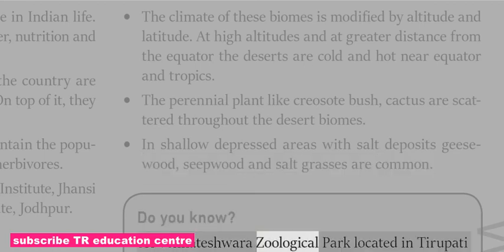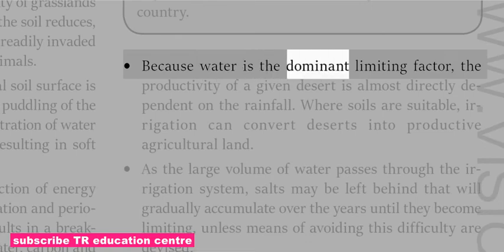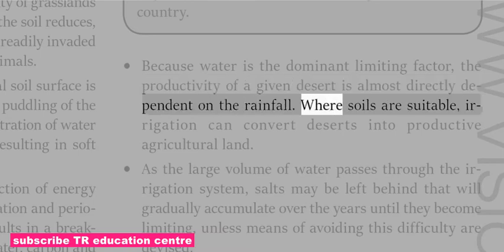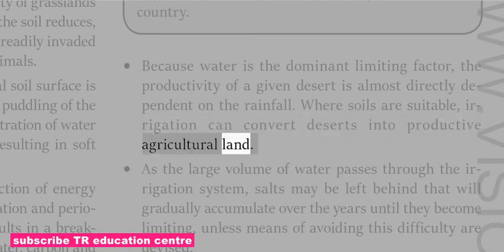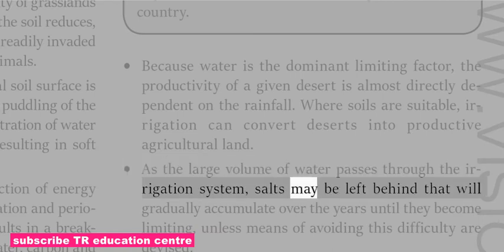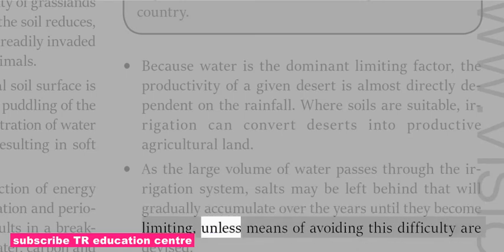Because water is the dominant limiting factor, the productivity of a given desert is almost directly dependent on the rainfall. Where soils are suitable, irrigation can convert deserts into productive agricultural land. However, as large volumes of water pass through irrigation systems, salts may be left behind that gradually accumulate over the years until they become limiting, unless means of avoiding this difficulty are devised.